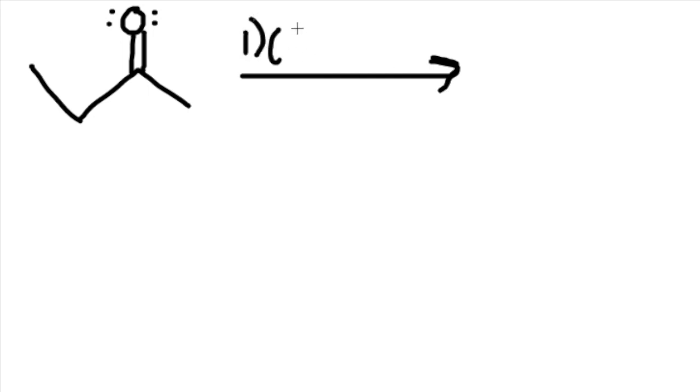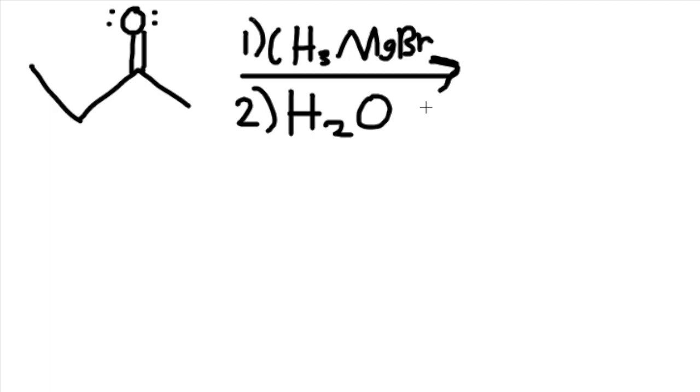And this reactant that we'll be using would be the Grignard reagent, so a carbon, CH3, with MgBr, magnesium bromine. So if you see MgBr, that means we're using Grignard reagent.